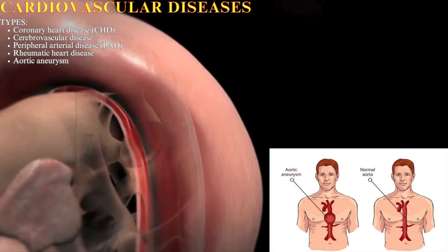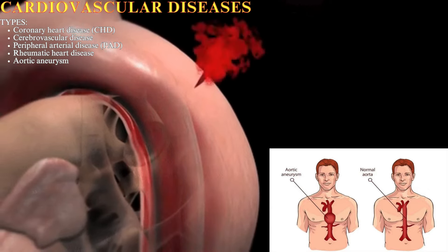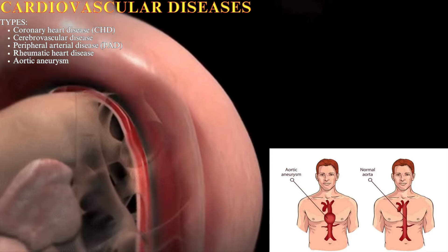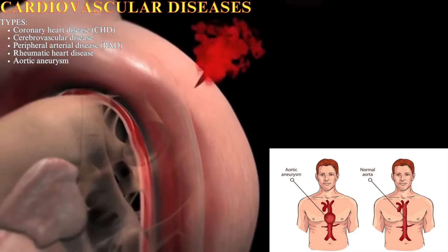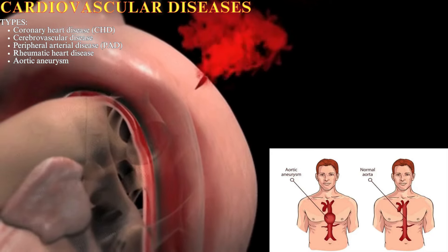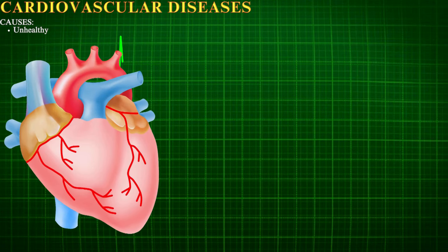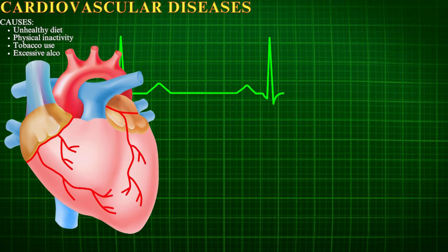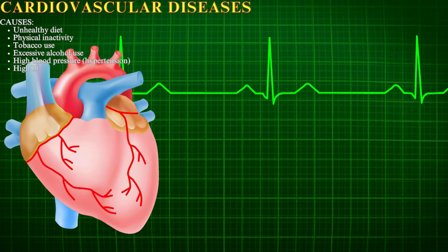Aortic aneurysm is a weakening of the wall of the aorta, the largest artery in the body. An aortic aneurysm can be life-threatening if it ruptures.